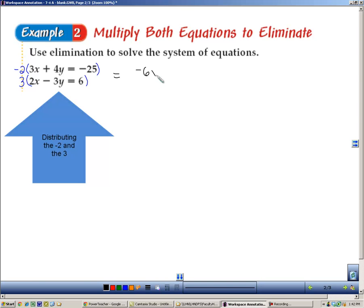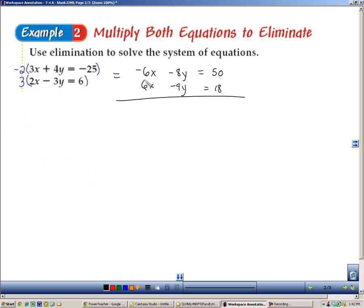So top's going to be negative 6x minus 8y equals 50, and positive 6x minus 9y equals 18. Unlike the last problem, you'll see that the coefficients here are opposites, and when they're opposites, you add. So negative 6 plus 6 is 0, negative 8 plus negative 9 is negative 17, and 50 plus 18 is 68.